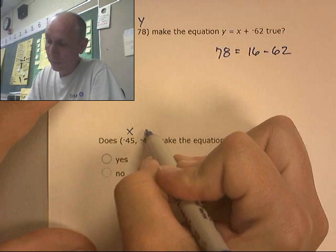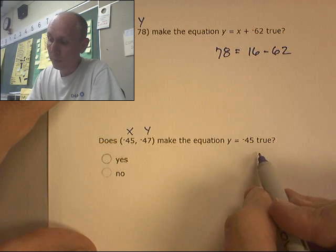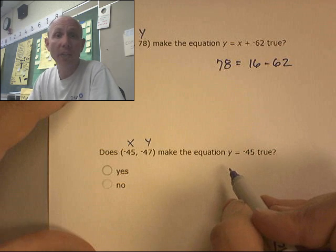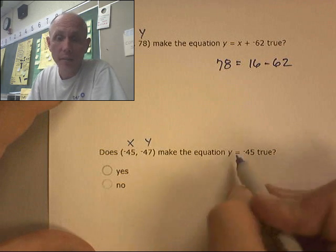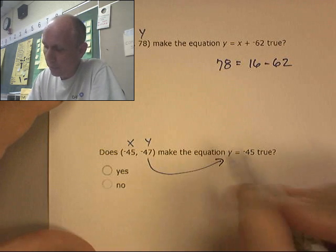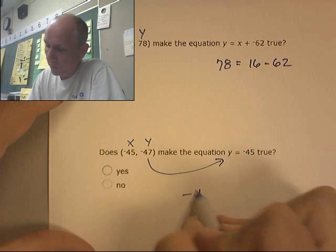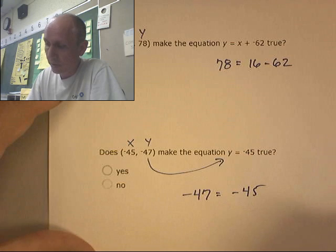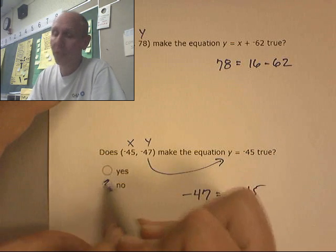Does (-45, -47) make this equation true? Well, oh, I'm freaking out. There's no x. There's no x. Very scared. Don't worry about it, man. Just take that y and put it where the y is. Ignore the x. Negative 47 equals negative 45. Is that true? No, that's not true.